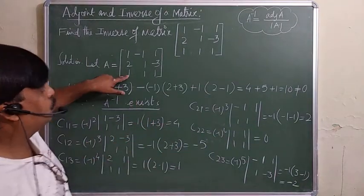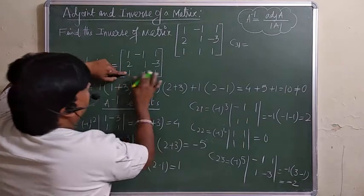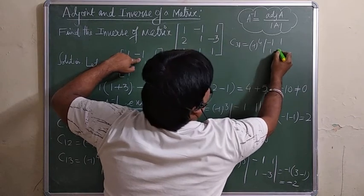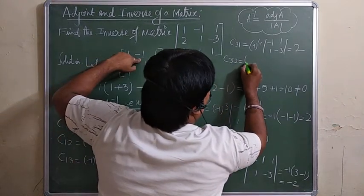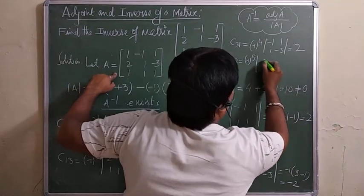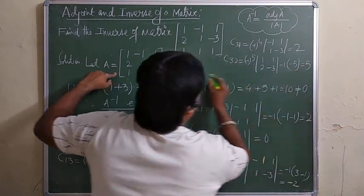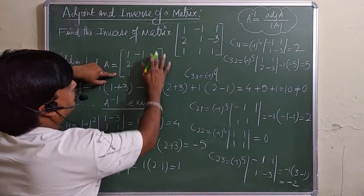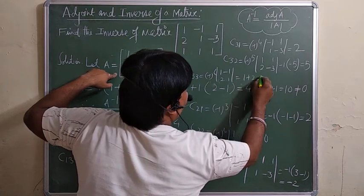For the third row cofactors: C_31 = (−1)^4 × (−1×(−3) − 1×1) = 3−1 = 2. C_32 = (−1)^5 × (1×(−3) − 2×1) = −(−3−2) = 5. C_33 = (−1)^6 × (1×1 − (−1)×2) = 1+2 = 3.